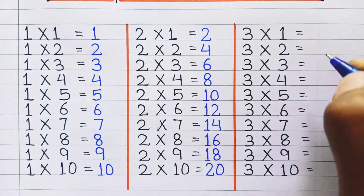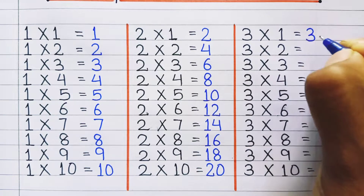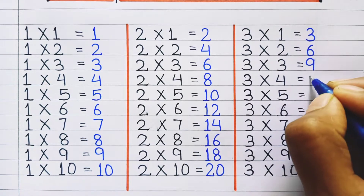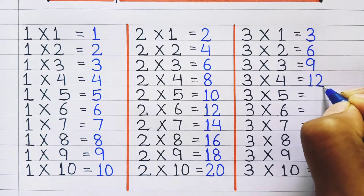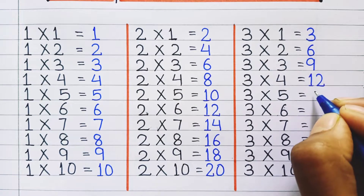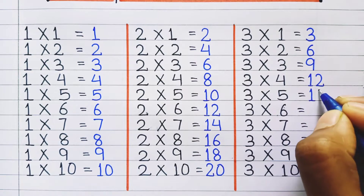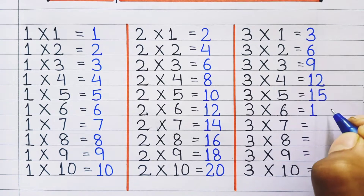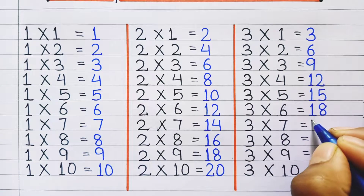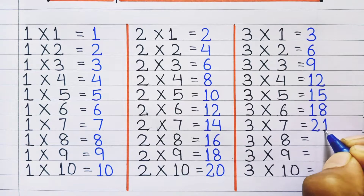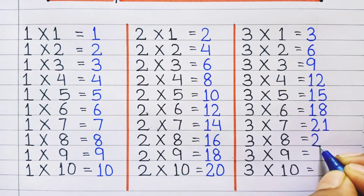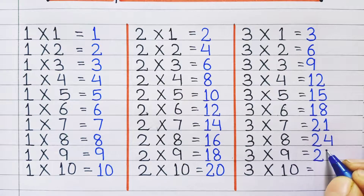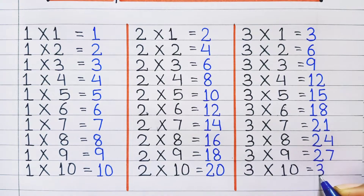Table of 3: 3 one's a 3, 3 two's a 6, 3 three's a 9, 3 four's a 12, 3 five's a 15, 3 six's a 18, 3 seven's a 21, 3 eight's a 24, 3 nine's a 27, 3 ten's a 30.